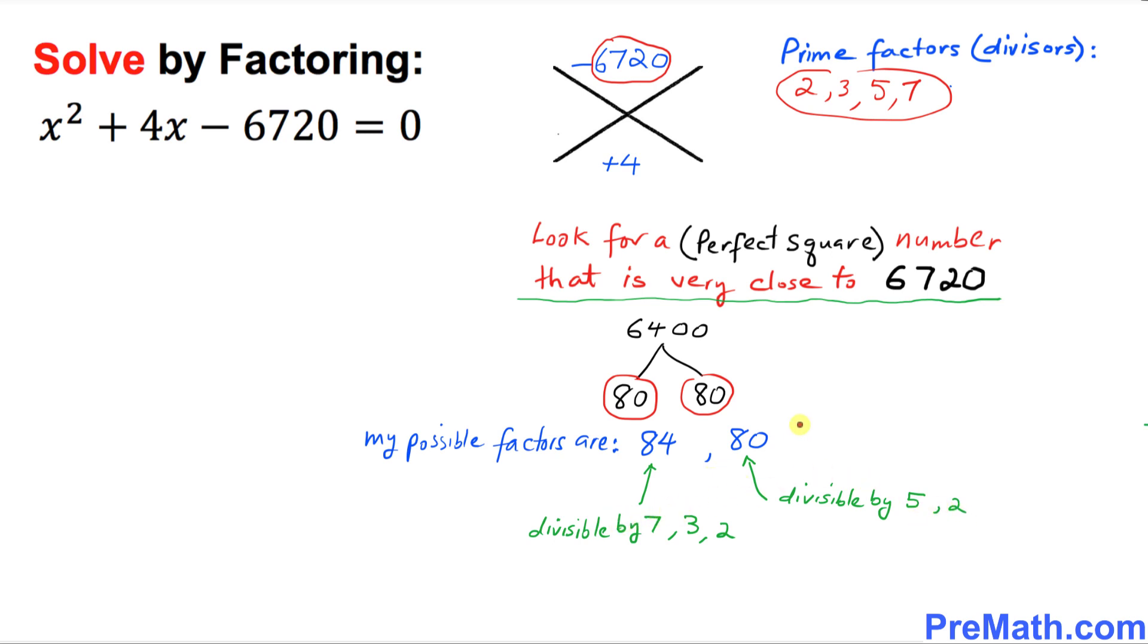Make sure they must be divisible by all these factors. So our possible factors are 80 and 84.